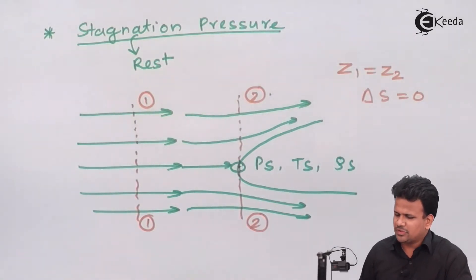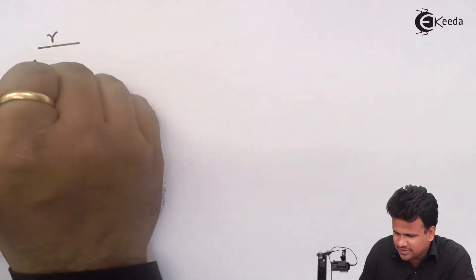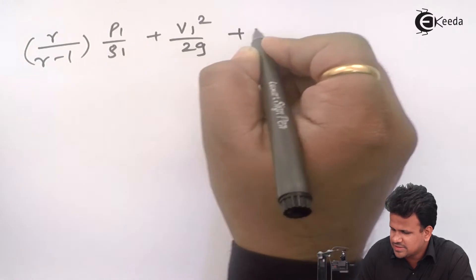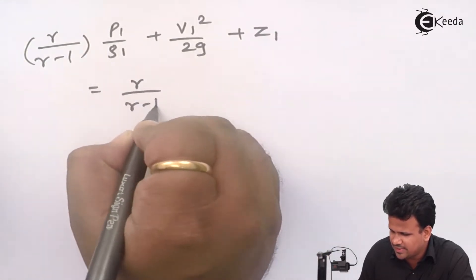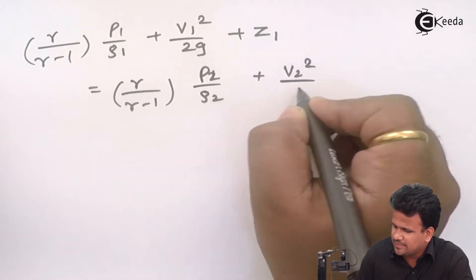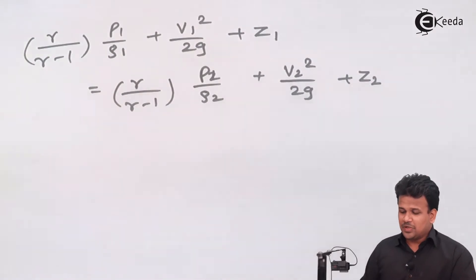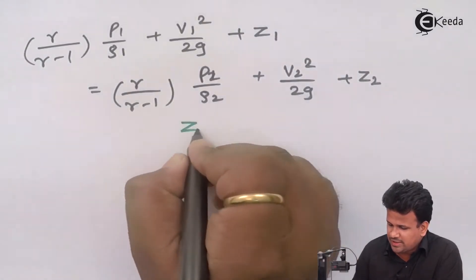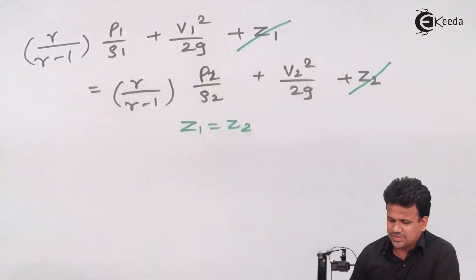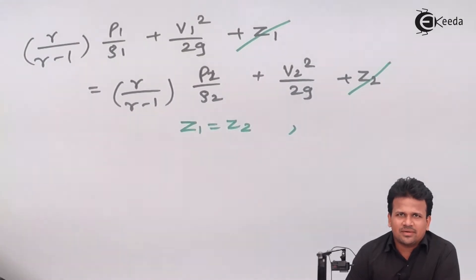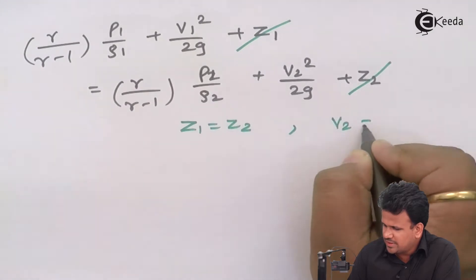Applying Bernoulli's equation for an adiabatic process gives: γ/(γ−1) · p₁/ρ₁ + v₁²/2g + z₁ = γ/(γ−1) · p₂/ρ₂ + v₂²/2g + z₂. Since it is a horizontal plane, z₁ equals z₂, so those terms cancel. And since it is the stagnation point, v₂ equals zero, so that term also drops out.